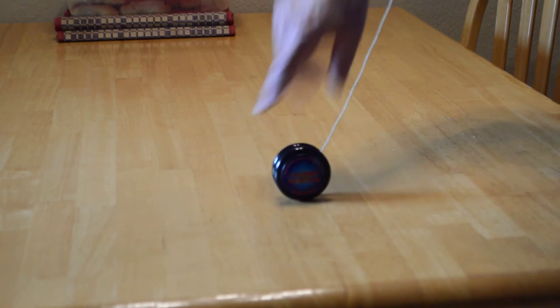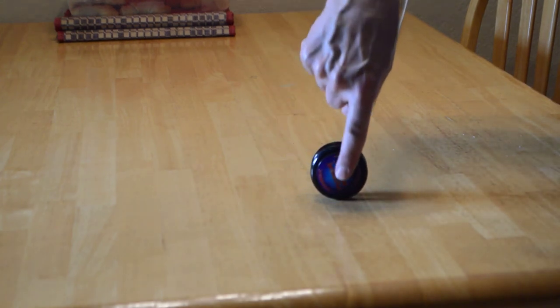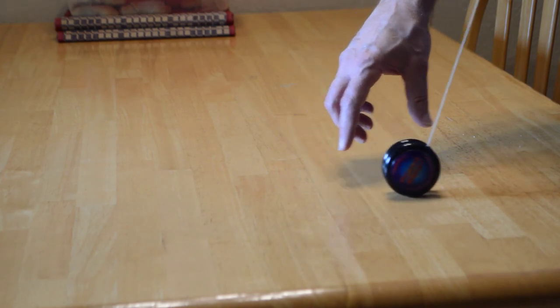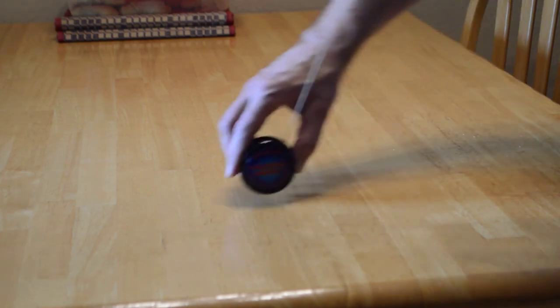When the string is on the line with the point of contact of the ground, at that point the moment arm is zero and there's no torque, and it just slides along the table without rotating.